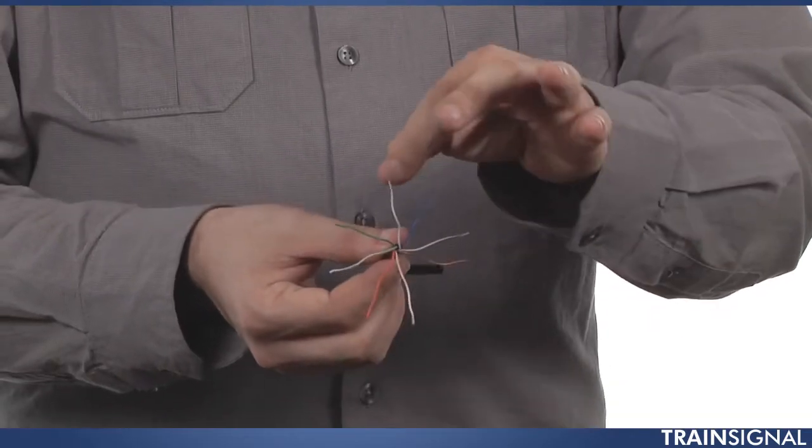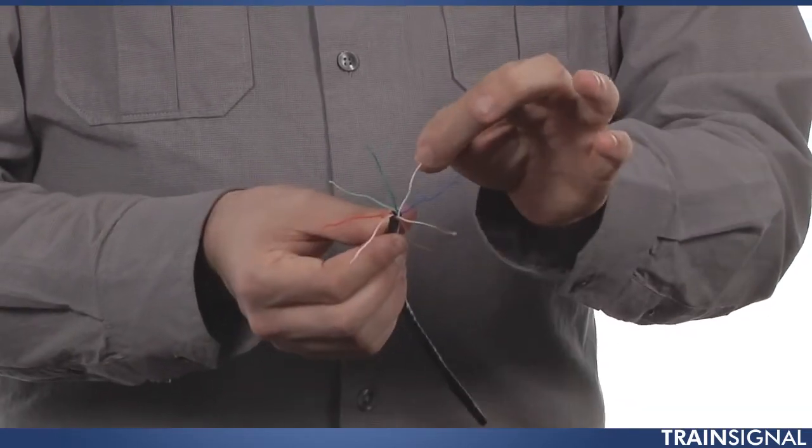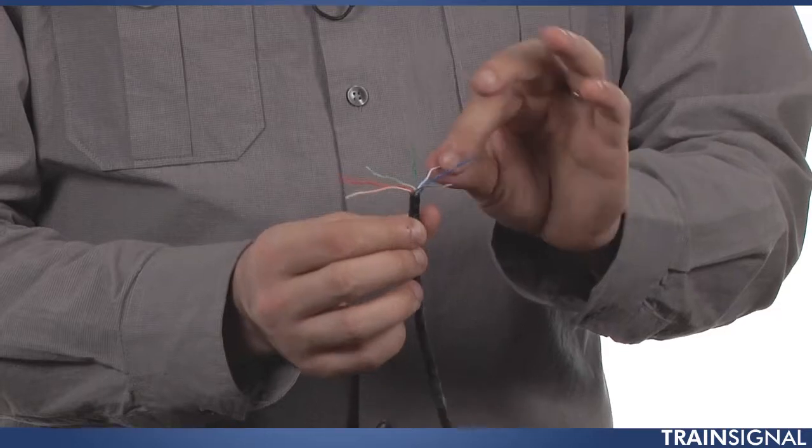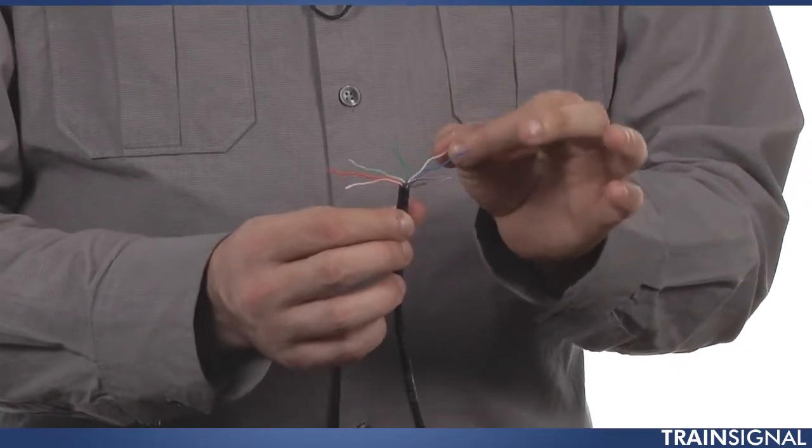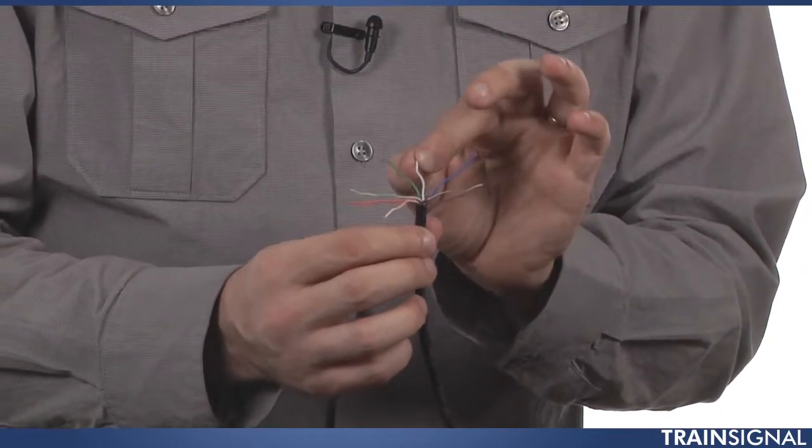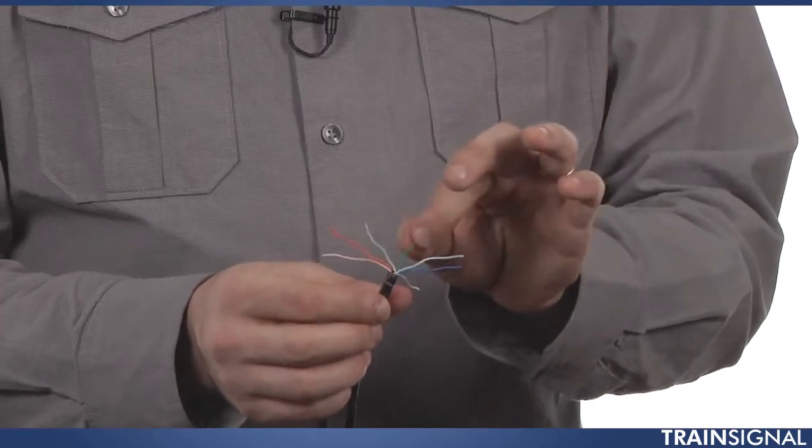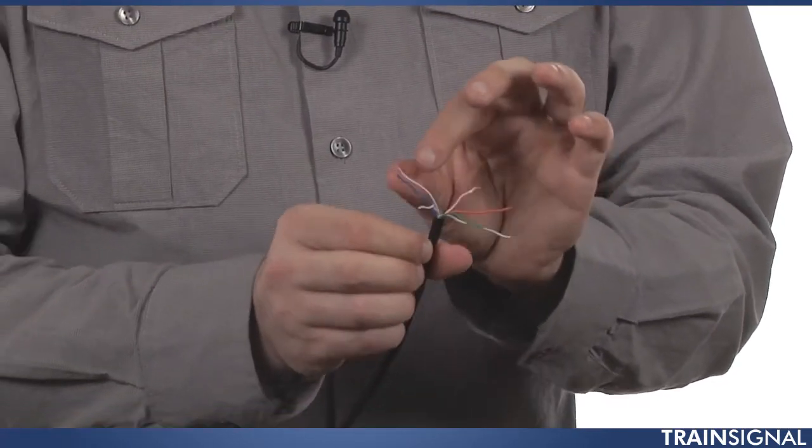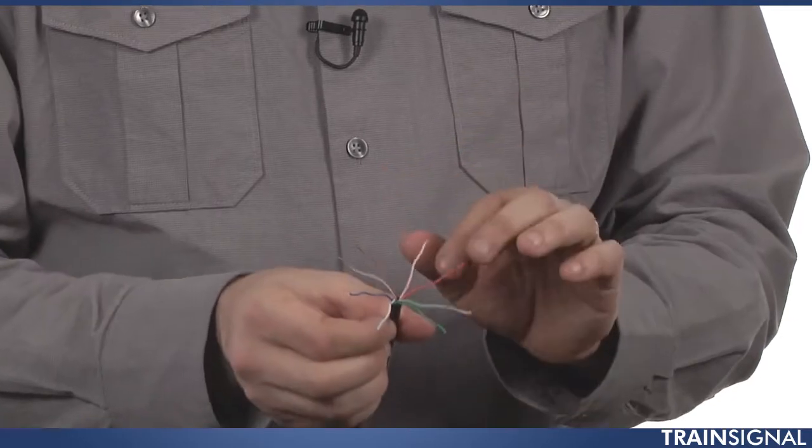And so now I have the eight wires all separated, and you'll notice by the way, when they're separated, you can really start to see the different colors. Here we have just the solid blue, and here is a blue and white stripe, and sometimes it's a little bit more clear than others. This particular one is almost a solid white, and you just barely see the blue on there. Green and green and white, orange and white, brown and brown and white. So I have them all on here.